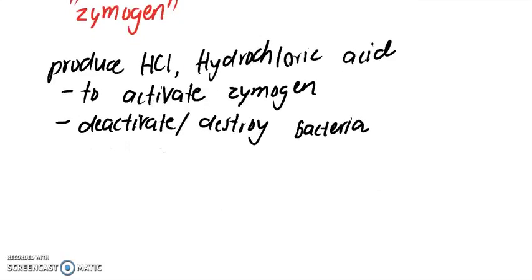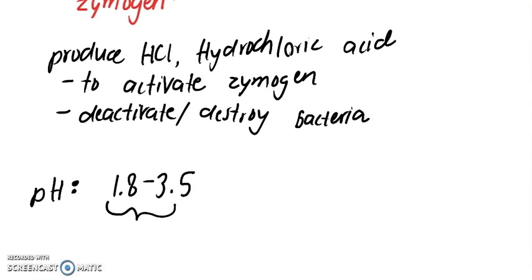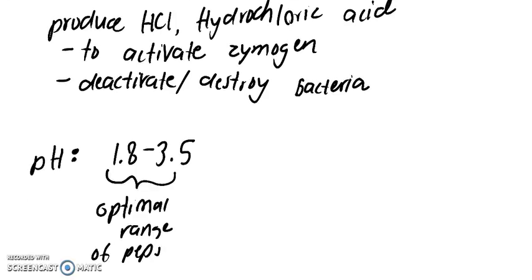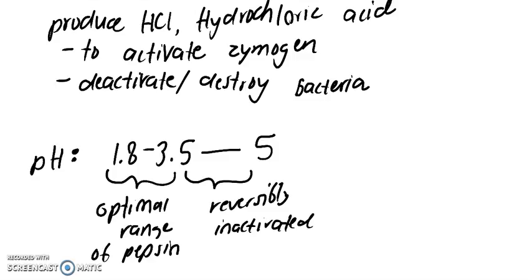Let's take a look at pepsinogen. Its optimal range is 1.8 to 3.5 pH. This is the optimal range of pepsin. To about 5 from this range, it can be reversibly inactivated.